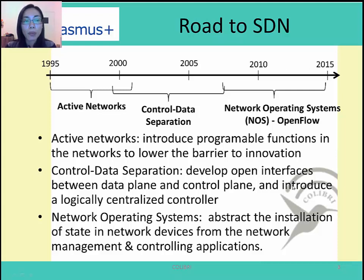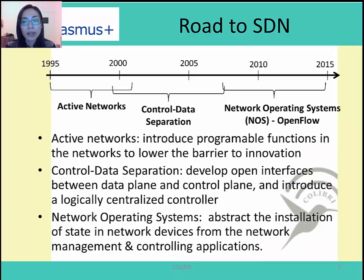From 1995 to 2000, the idea of active networks was introduced. It represents a radical approach to network control by envisioning programming interfaces on individual network devices, which made the network programmable. This allowed customization of some network functions and hence lowered the barrier to innovation.